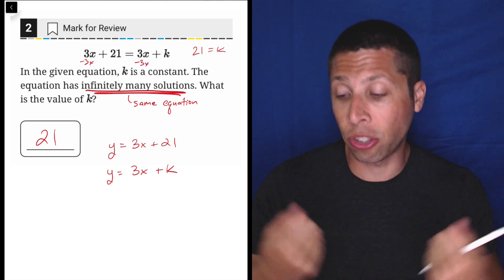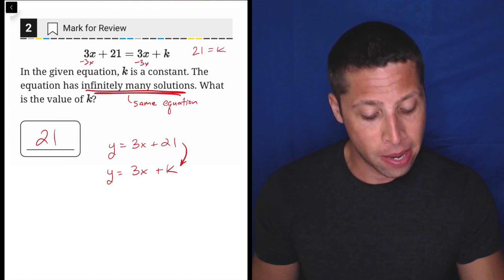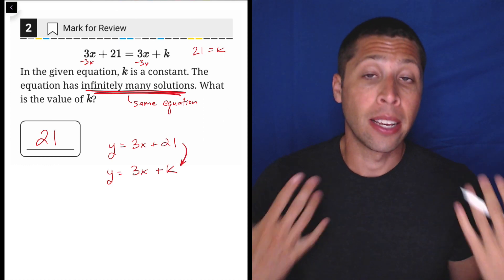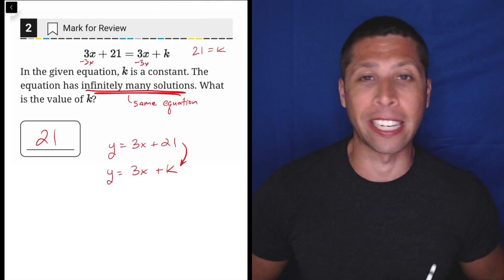Infinitely many solutions just means it's the same equation. So both the slopes and the Y intercepts need to be the same. And that's why in my mind, K was 21 here. Make sure you memorize infinitely many solutions. It is very likely to come up on your SAT.